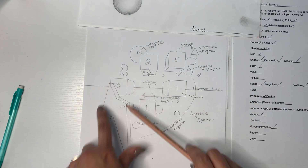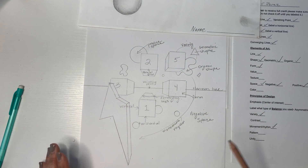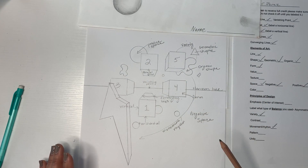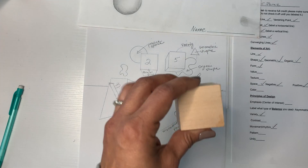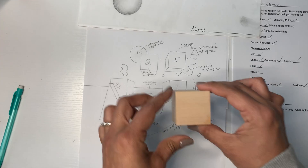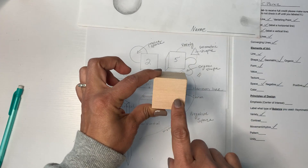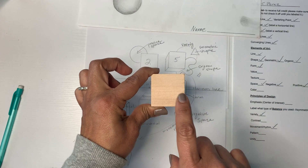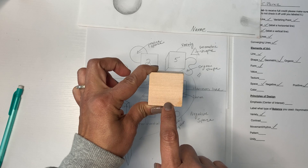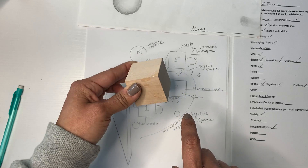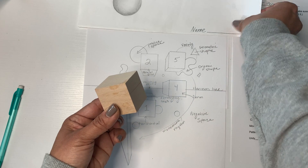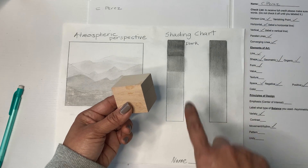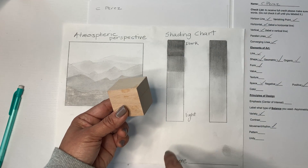We're going to shade and give value to one of these cubes. When I say go ahead and finish it off, you can do whatever you want, but let me show you what happens. When we're shading these boxes, if I turn it on its side you can see our value scale.